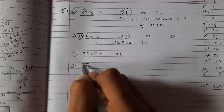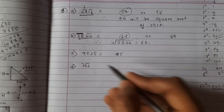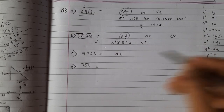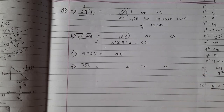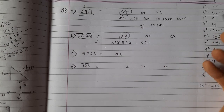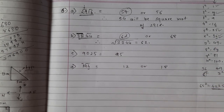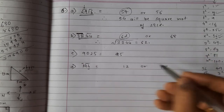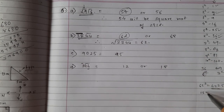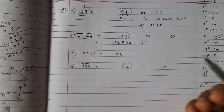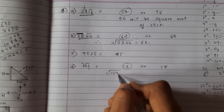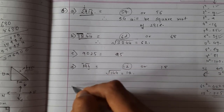For 144: make two groups — 1 and 44. Units digit 4 means units digit of square root is 2 or 8. The group 1 falls between 1 (1²) and 4 (2²); take 1. Candidates are 12 or 18. Find 15² = 225. Since 144 < 225, square root = 12. If you know directly, you can write it without all these steps.